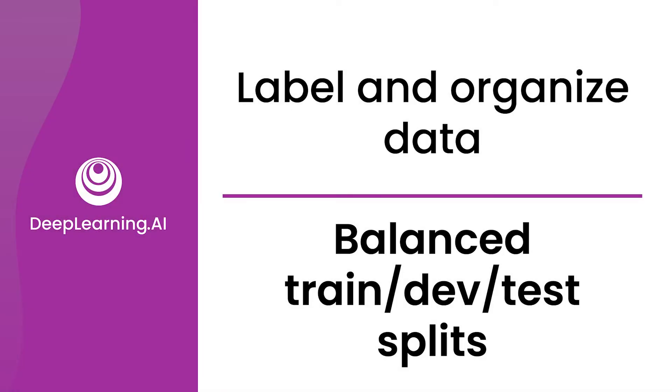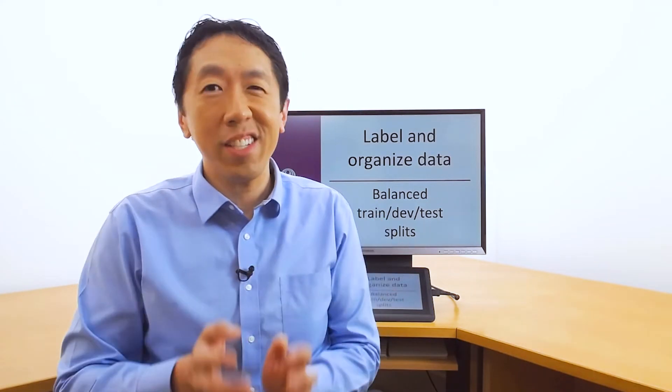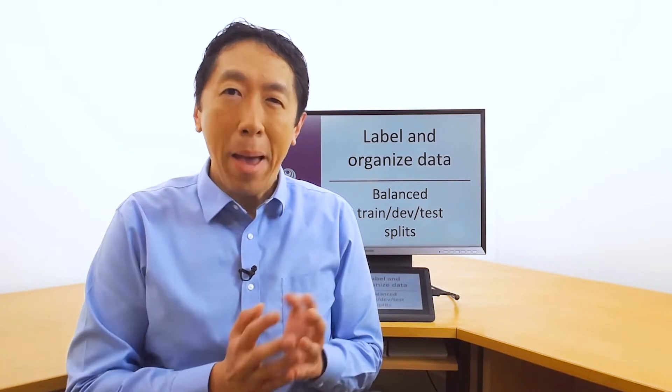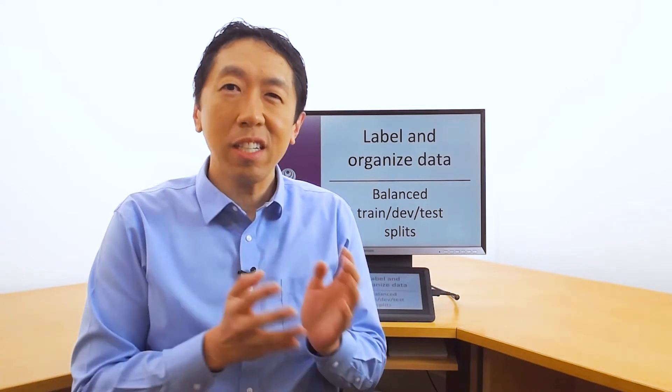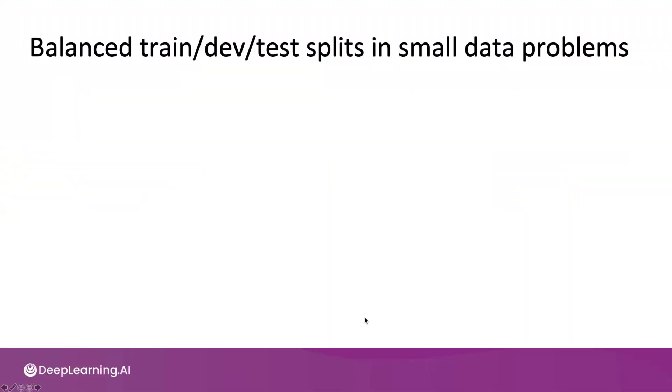Many of us are used to taking a dataset and randomly splitting it into train, dev, and test sets. It turns out when your dataset is small, having balanced train, dev, and test sets can significantly improve your machine learning development process. Let's take a look.